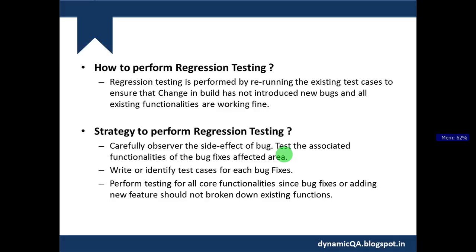Regression testing is basically performed by rerunning the affected test cases of the build. If the build was released due to bug fixes, I will rerun the test cases that are associated with those bug fixes. If the build was released due to adding new functionalities, we also need to consider the associated functionalities.